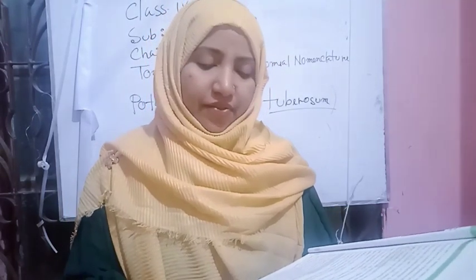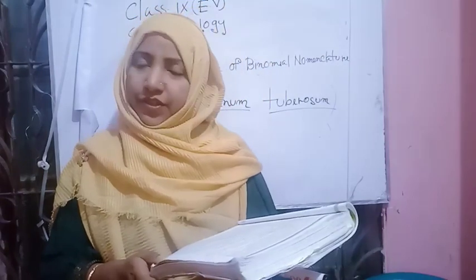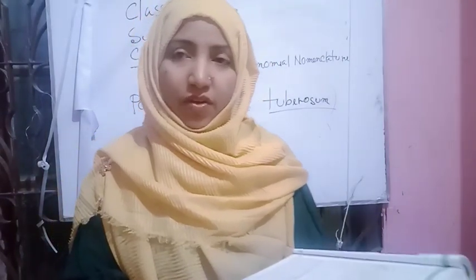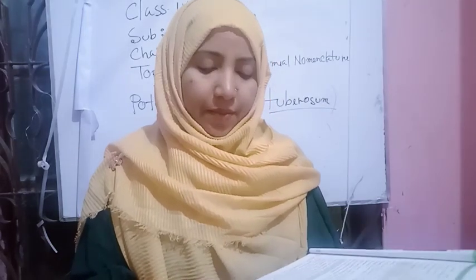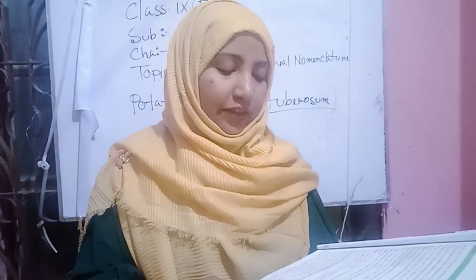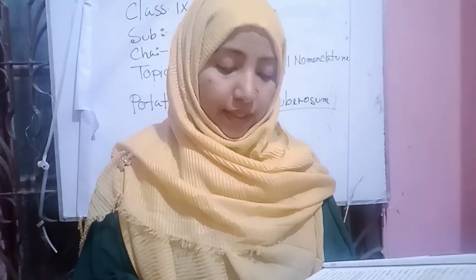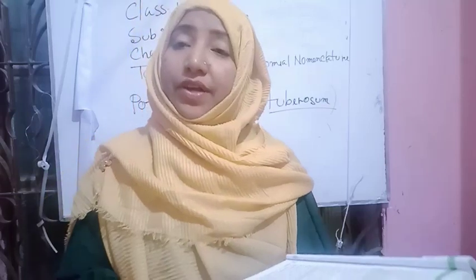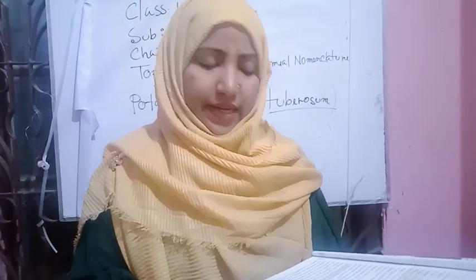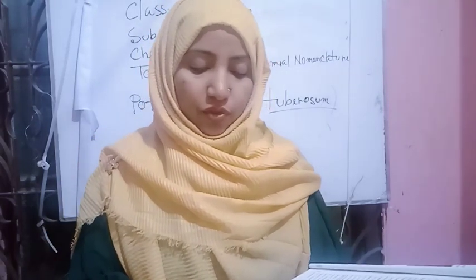This system of scientific naming of an organism is termed binomial nomenclature. The aim of binomial nomenclature is to unambiguously identify every organism. The scientific naming of an organism is accomplished in accordance with some rules and regulations.